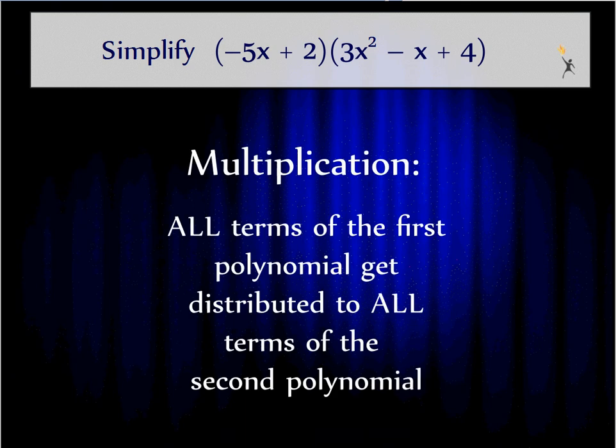Multiplication is basically just a big distribution problem. We're going to distribute all the terms of the first set of parentheses or the first polynomial to all the terms of the second polynomial. So see how I have two terms in the first polynomial and then three terms in the second one? That means when I get all my multiplication done, I'm going to have six terms because 2 times 3 is 6. So let's start.